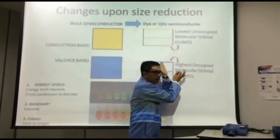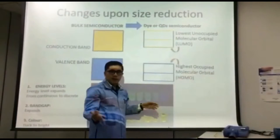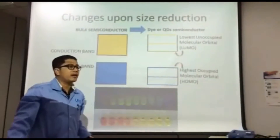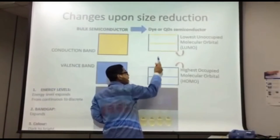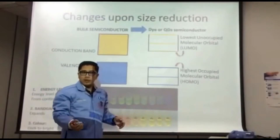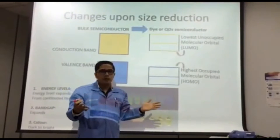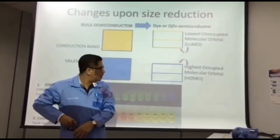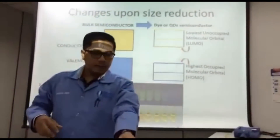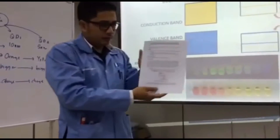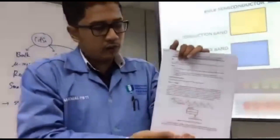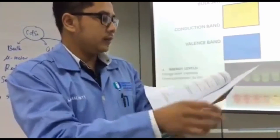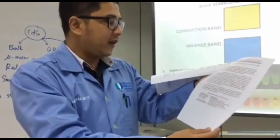What happens to quantum dot 2 if we reduce the size even further? The band gap will expand even more, and the HOMO and LUMO levels will also change. These are the things you need to prove using DFT — Density Functional Theory calculations. There are theories here that you need to read on your own; I have simplified them for you.